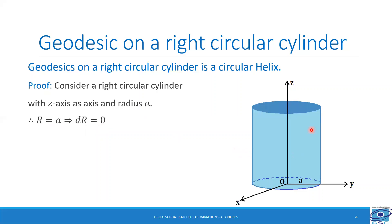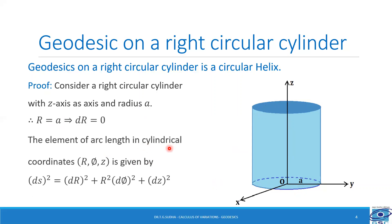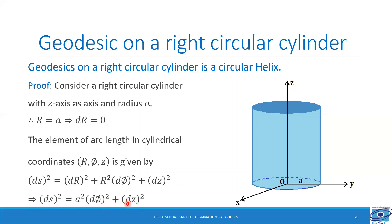This is the right circular cylinder whose axis is the z-axis and the base circle has radius equal to A units. Now, let us consider the element of arc length in cylindrical coordinates, that is r, phi and z. That is given by dS² = dr² + r² dφ² + dz². Now, let us substitute r = A as well as dr = 0, which gives dS² = A² dφ² + dz².